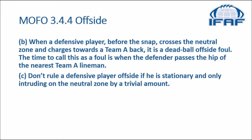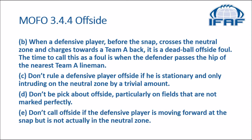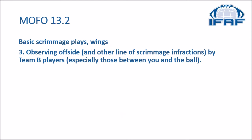C) Don't rule a defensive player offside if he is stationary and only intruding on the neutral zone by a trivial amount. D) Don't be picky about offside, particularly on fields that are not marked perfectly. E) Don't call offside if the defensive player is moving forward at the snap but is not actually in the neutral zone. Section 13-2, dealing with responsibilities for wings on basic scrimmage play, says to observe offside and other line of scrimmage infractions by team B players, especially those between you and the ball. As a wing, you are primarily responsible for anything that happens between you and the ball, and secondarily responsible for what happens on the other side.